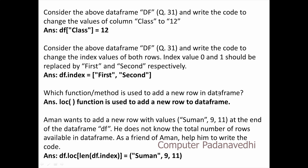So we will change the index value of the default case. Now we'll call df.index. Amin wants to add a new row with the values 'Oman', 9, 11 at the end of the DataFrame. He does not know the total number of rows available. As a friend, help Amin write the code. He will create a new row using df.loc[len(df.index)].